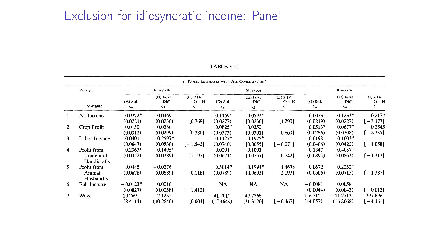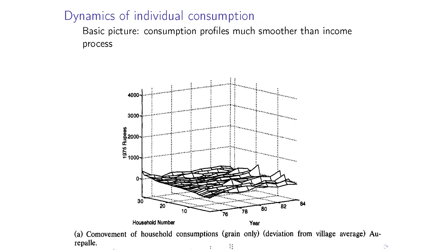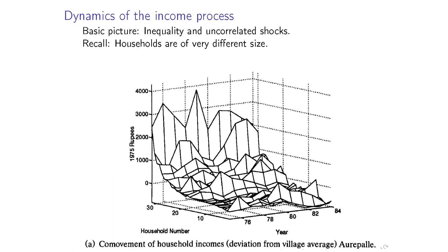Summary of risk and insurance in village India: these villages are doing reasonably well, though not perfectly. They're sharing a lot of the risk. The reason consumption looks so flat relative to income is that they're actively engaged in borrowing, lending, or transfers to bridge the gap between consumption and income.